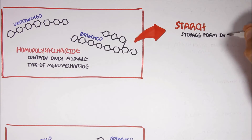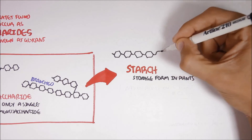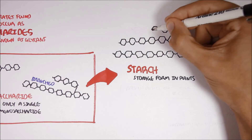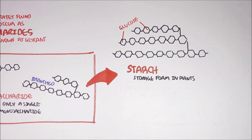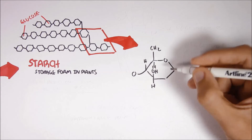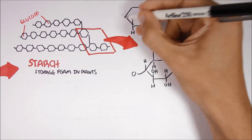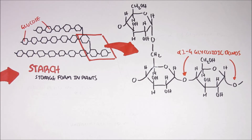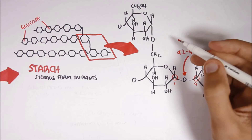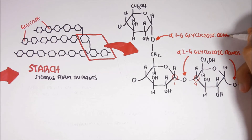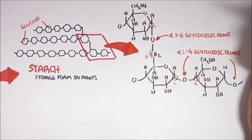Starch is a storage form of monosaccharides in plants. It is the main carbohydrate in the human diet, found in our bread, cereal and rice. Starch is only made up of glucose, because it is a homopolysaccharide. Here we have our regular alpha-1,2,4 glycosidic bond between two glucose molecules, because carbon number one and carbon number four are involved in the linking process. However, the branching points use an alpha-1,2,6 glycosidic bond, because carbon number one and carbon number six are involved.